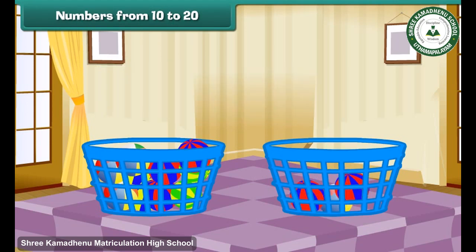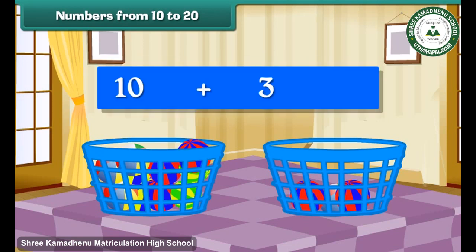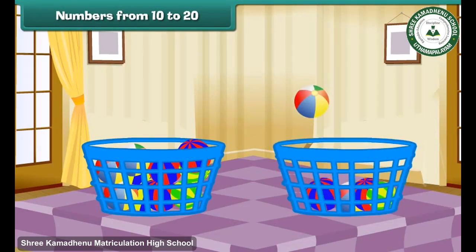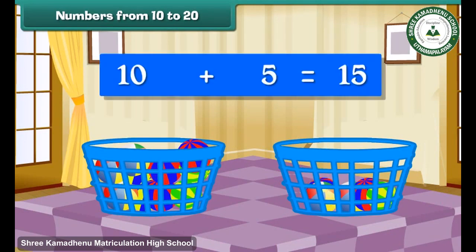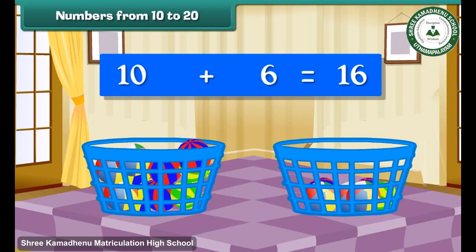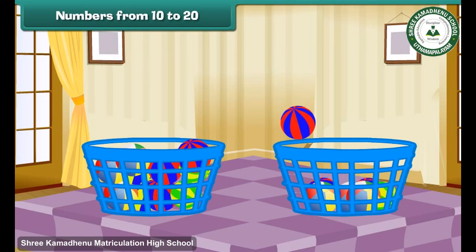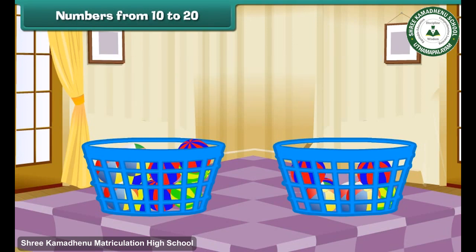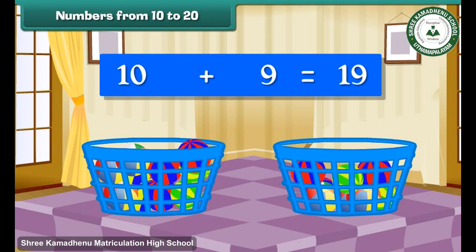Drop one more ball into the second bucket. Group of 10 plus 3 makes 13. Group of 10 plus 4 makes 14. Group of 10 plus 5 makes 15. Group of 10 plus 6 makes 16. Group of 10 plus 7 makes 17. Group of 10 plus 8 makes 18. Group of 10 plus 9 makes 19.